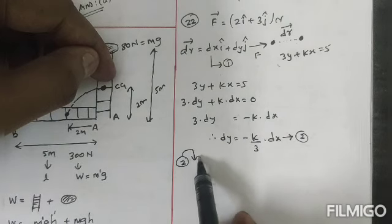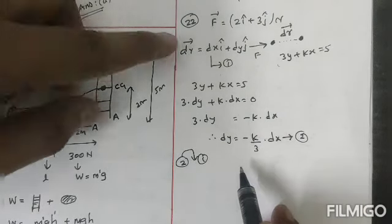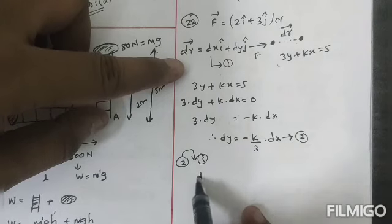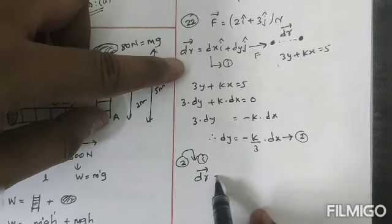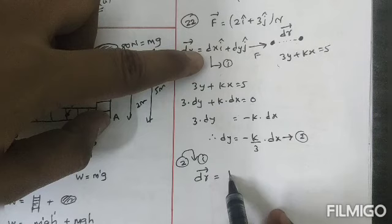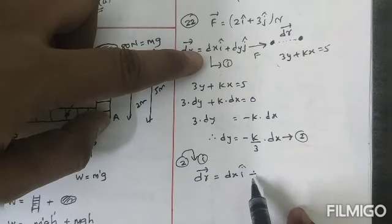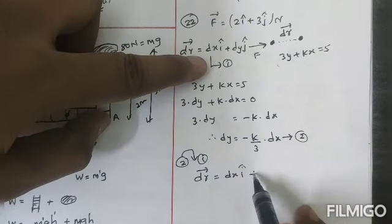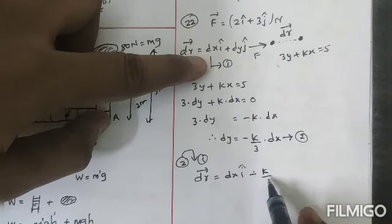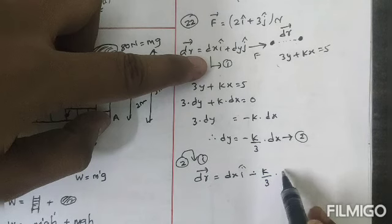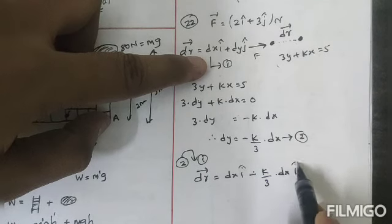This equation number 2 is applied in equation number 1. Therefore I can write equation number 1: dr vector equal to dx i cap plus dy j cap.